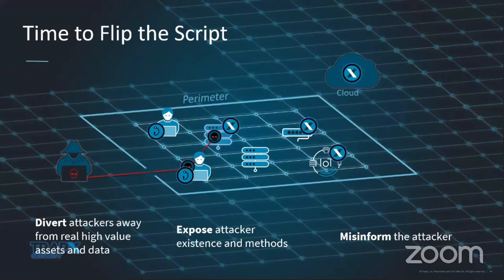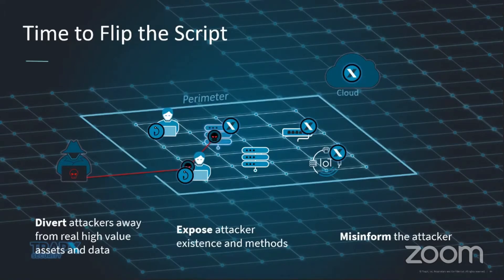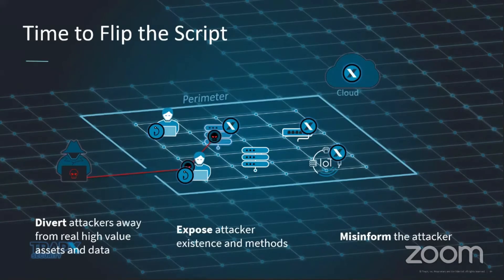What this does is essentially change the following things. First — and this is a huge benefit — attackers are diverted away from the real high-value assets, the real data, the real operations they're trying to disrupt. They're diverted into this deceptive environment with fake assets. By the fact that they're touching any of those fake assets — an environment that has no legitimate business use, created only for the purpose of attackers — their activity is now exposed. I know exactly that they are in my network, I know what they're doing, how they're doing it, how long they've been doing it. And I can feed them bad data. I can misinform the attacker regarding how my network looks, what my data is, and where they've landed. Now I control the entire game.